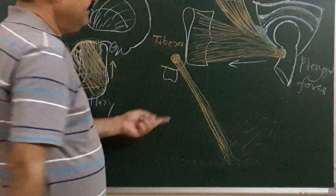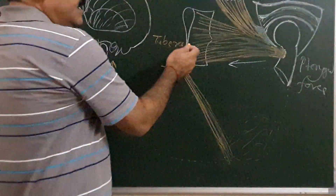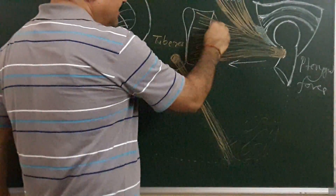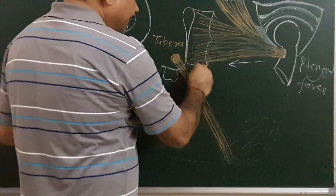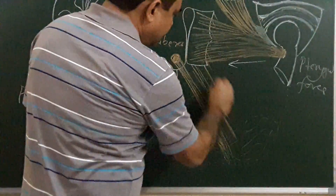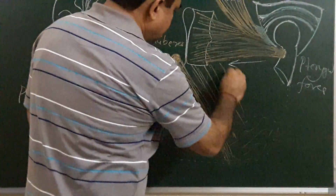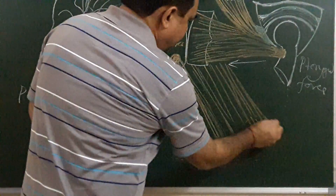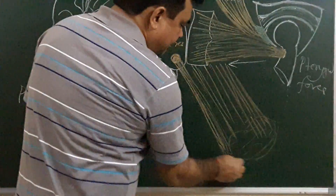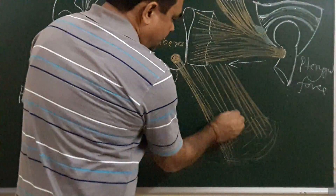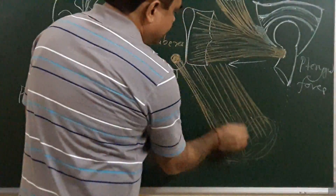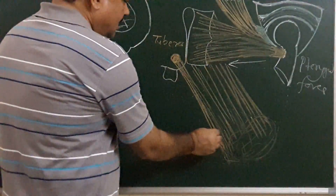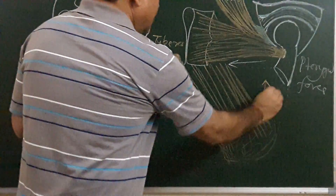The deep head takes origin from the inner aspect of the lateral pterygoid plate and is inserted on the rough area present on the medial surface of the ramus and angle of the mandible. The action of this muscle is elevation and also protrusion of the mandible.